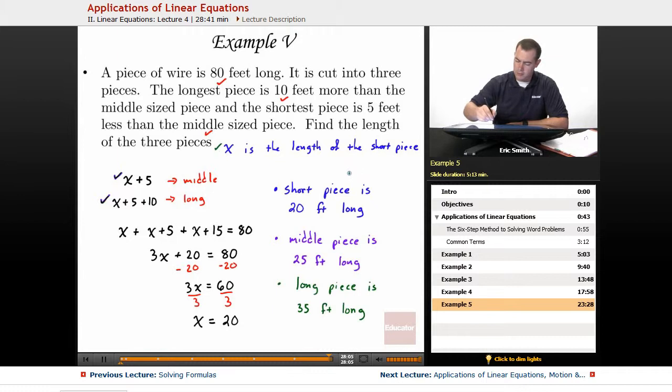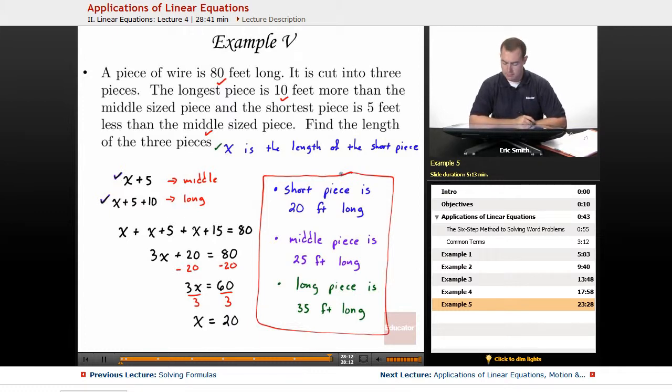So now we have information about all 3 bits of wire. Alright, now if we add all of these up, we should get a total of 80. 20 plus 25 would be 45, plus another 35, sure enough adds up to a total of 80 feet.